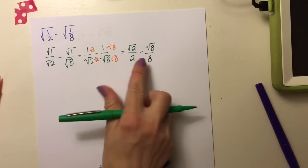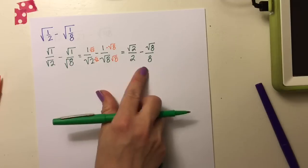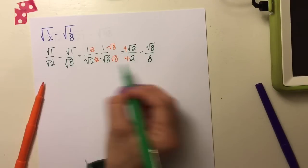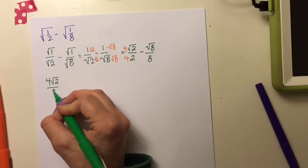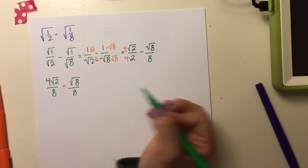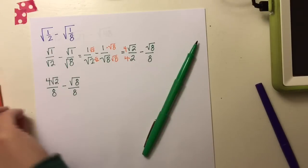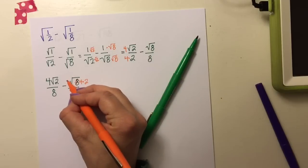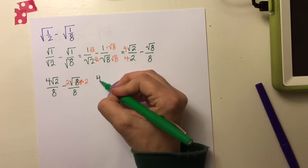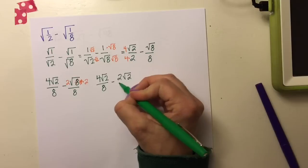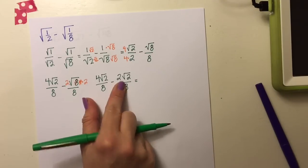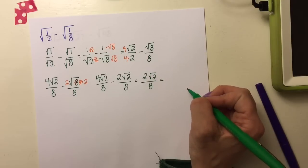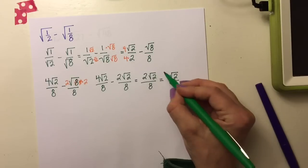Now I have √2/2 minus √8/8. The denominators 2 and 8 aren't common, so I multiply the first fraction by 4 to get 4√2/8 minus √8/8. They share a common denominator, but the radicands still differ. I rewrite √8 as √(4×2), and since √4 = 2, that becomes 2√2. So now I have 4√2/8 minus 2√2/8 — common denominator and same radicand.